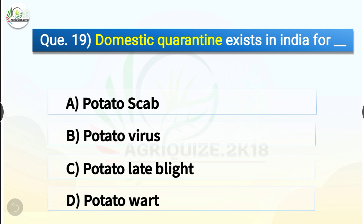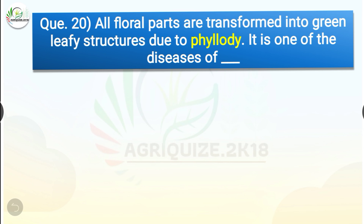Question number nineteen: Domestic quarantine exists in India for dash. The options are potato scab, potato virus, potato late blight, or potato wart. The correct answer is option D, potato wart. Currently domestic plant quarantine exists for four diseases: wart caused by Synchytrium endobioticum of potato from 1959, bunchy top virus of banana from 1959, mosaic virus of banana from 1961, and apple scab from 1979.